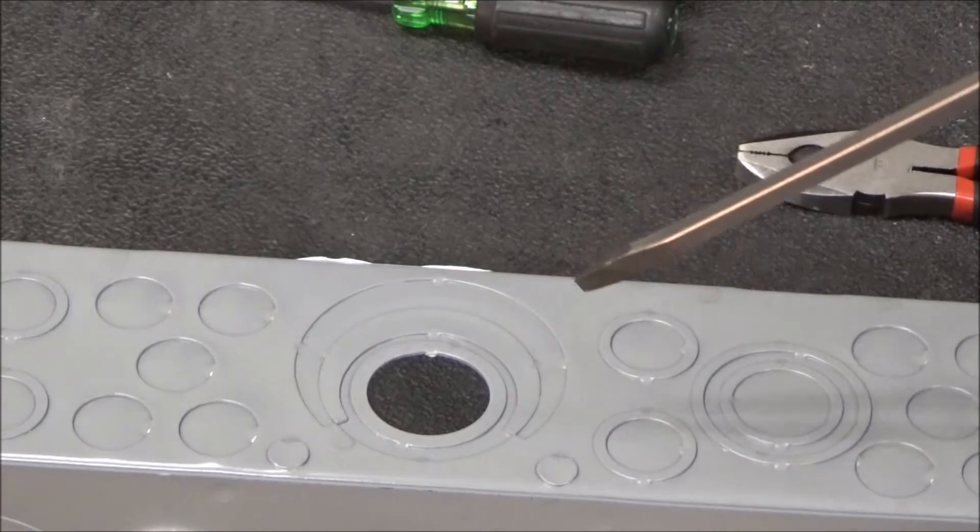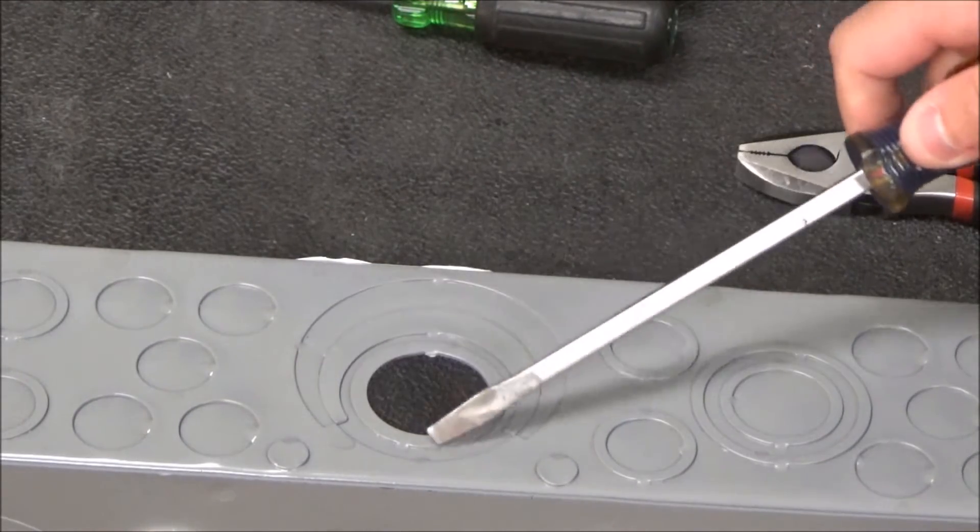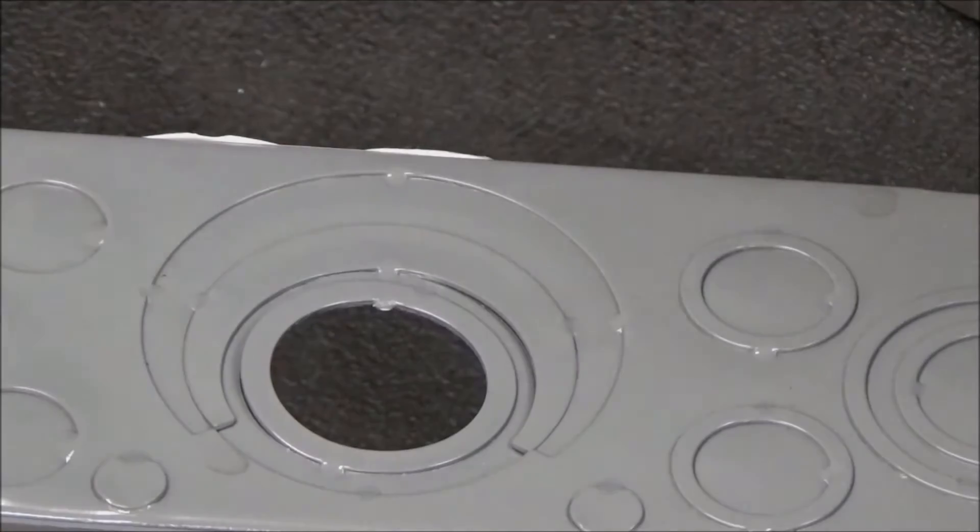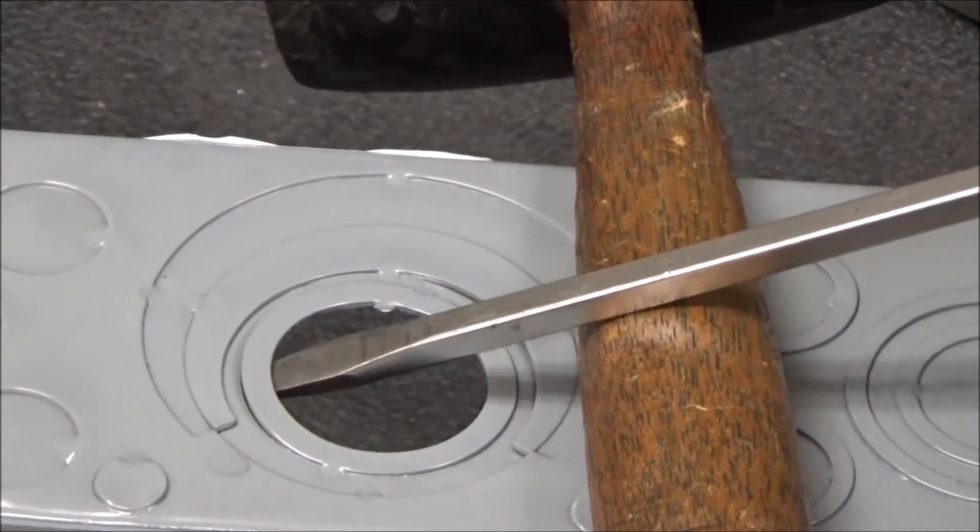Now with the center knockout removed, I'll then work to the next ring. There are two spot welds on this, so I want to go in between, but this one I don't actually knock out. I want to pry this one up.